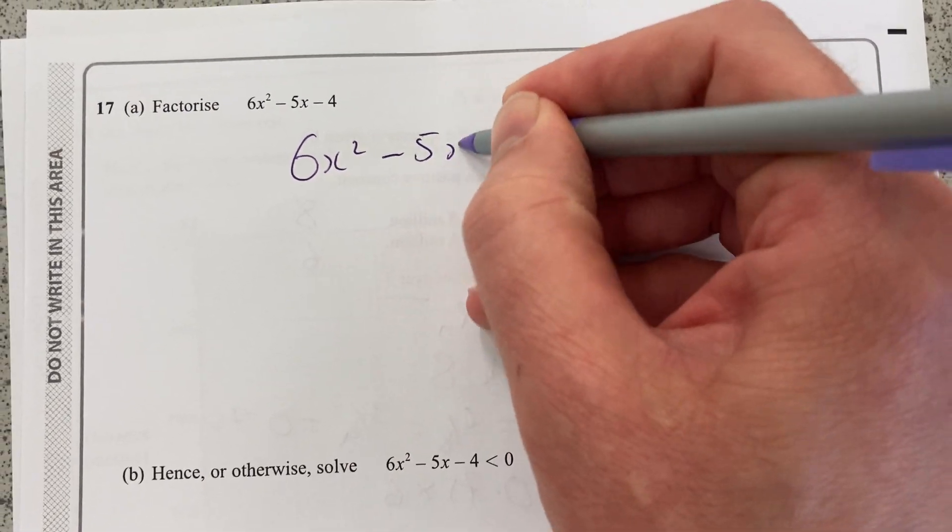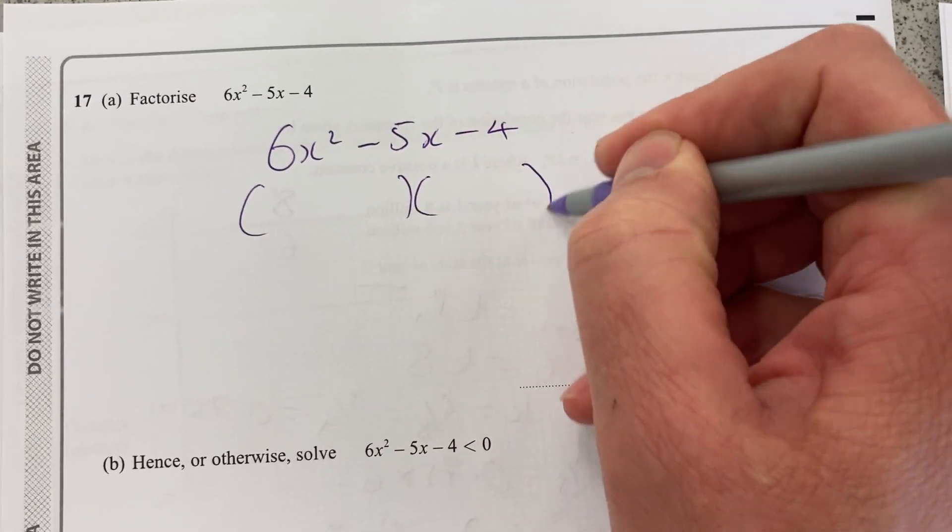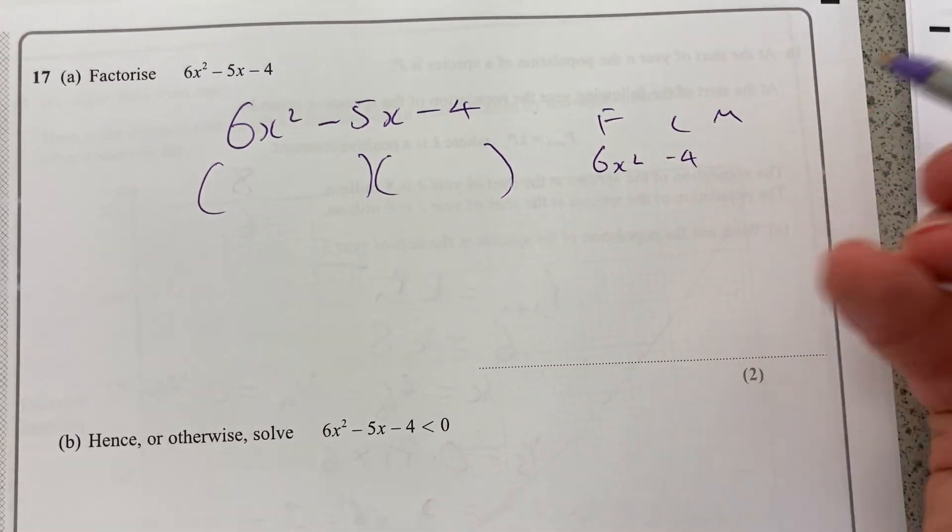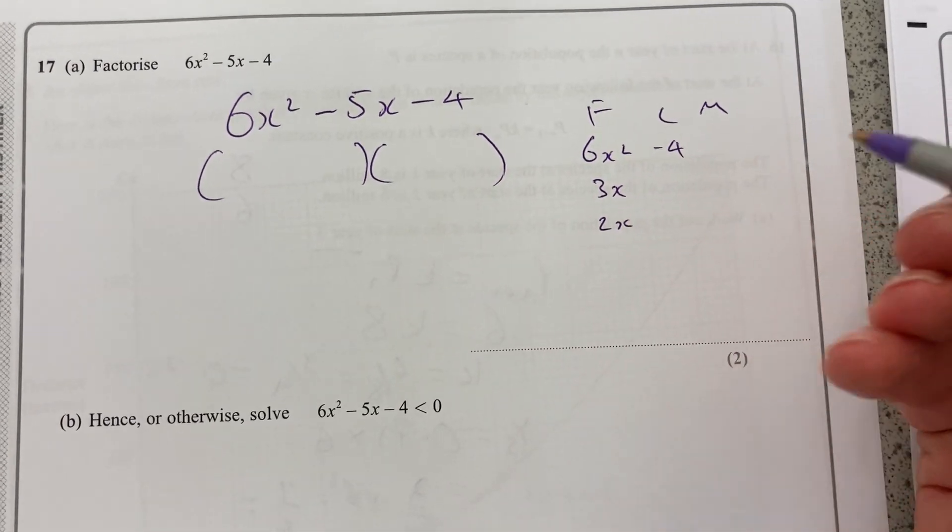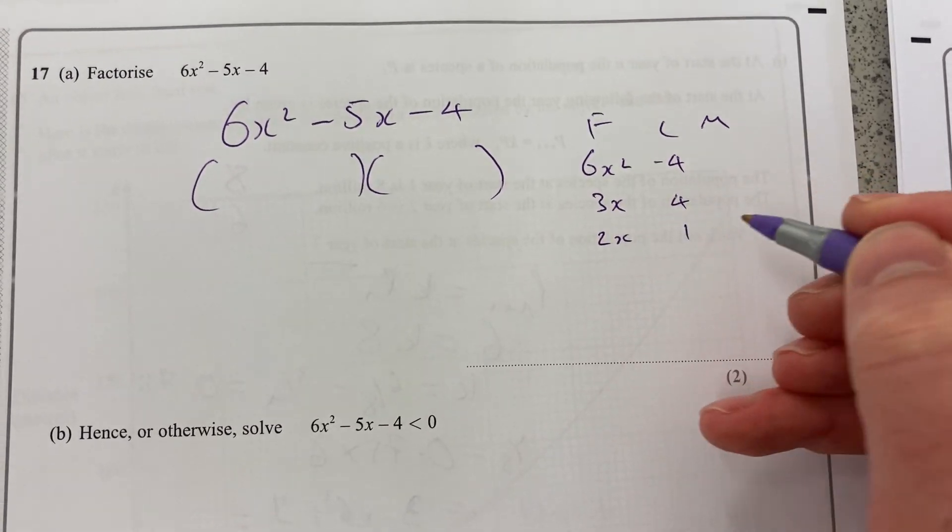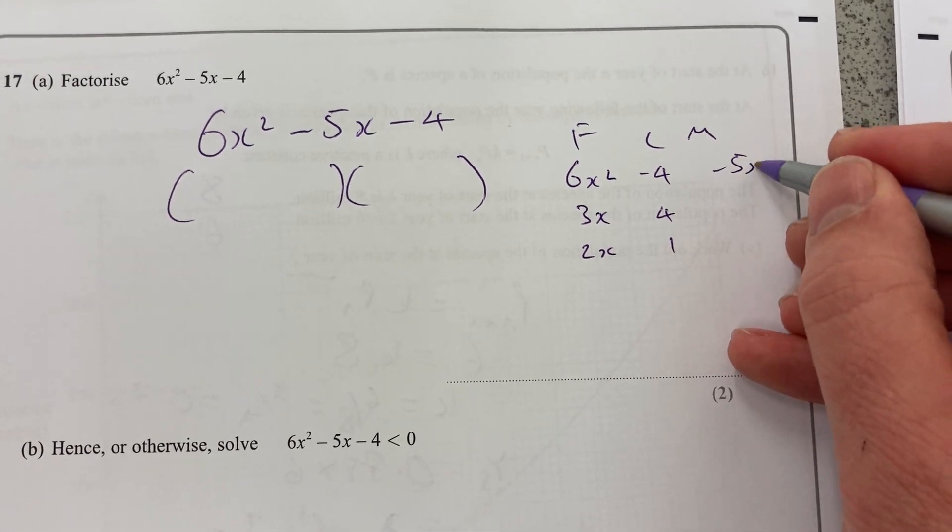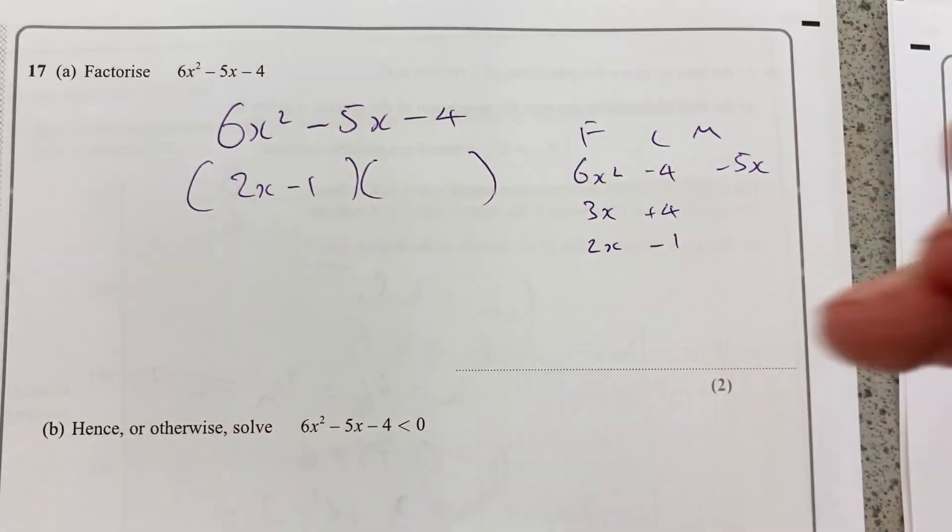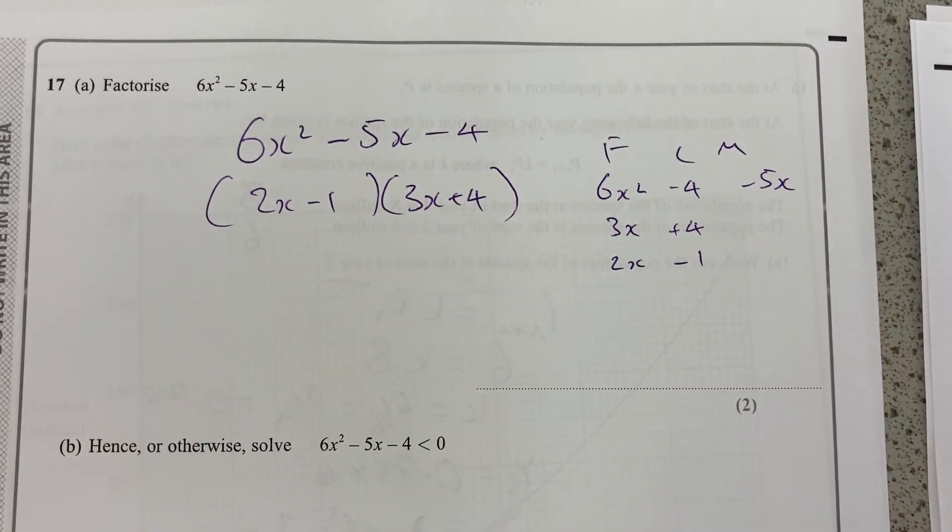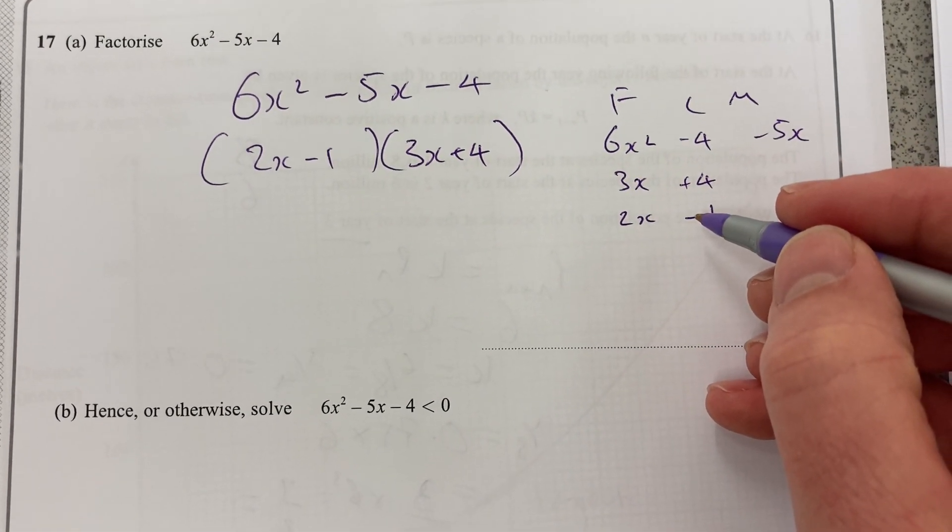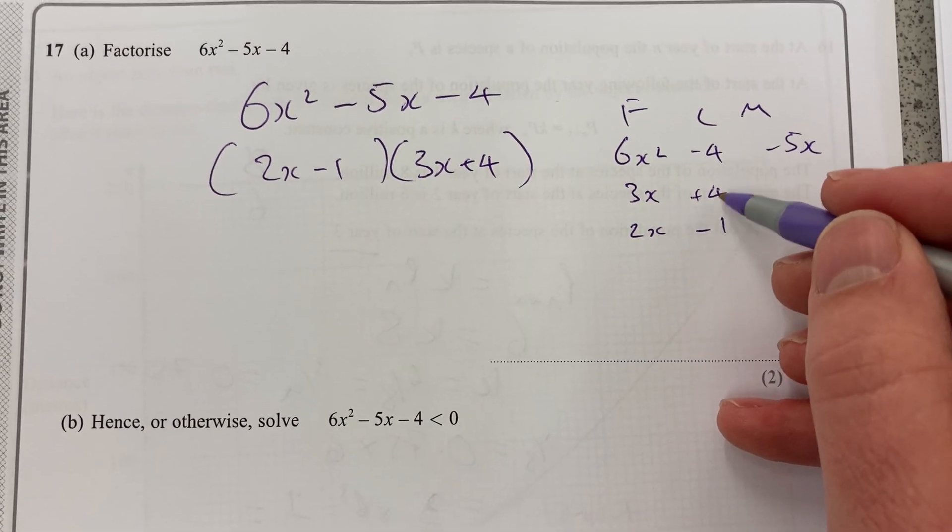Question 17. We have to factorize 6x squared minus 5x minus 4. You want two brackets here. I used to use school techniques first, last, and middle. So take those factors like that. Those factors could be 1 and 4. You could mix them around. Now I want to get the signs right. I want to end up with minus 5x. So if I have 8 minus 3, I will get it. So 2x minus 1, 3x plus 4. And that'll give me the correct answer there.